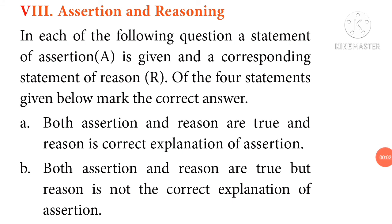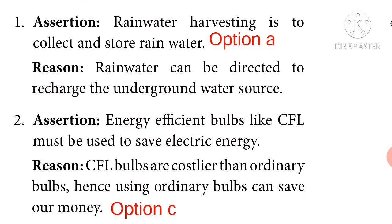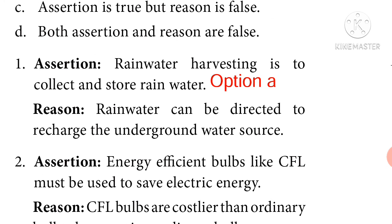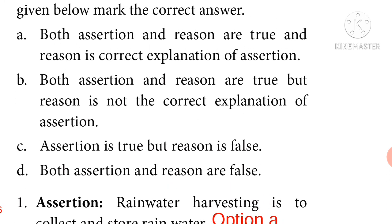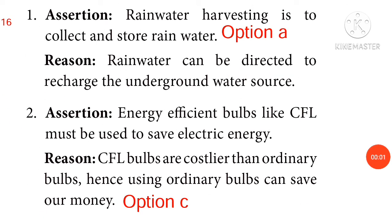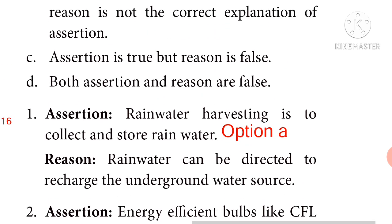Assertion and Reasoning. Assertion: Rainwater harvesting is to collect and store rainwater. Reason: Rainwater can be directed to recharge the underground water source. Correct answer: Option A — Both assertion and reason are true, and reason is the correct explanation of assertion. Assertion: Energy efficient bulbs like CFL must be used to save electrical energy. Reason: CFL bulbs are costlier than ordinary bulbs, hence using ordinary bulbs can save money. Correct answer: Option C — Assertion is true but reason is false.